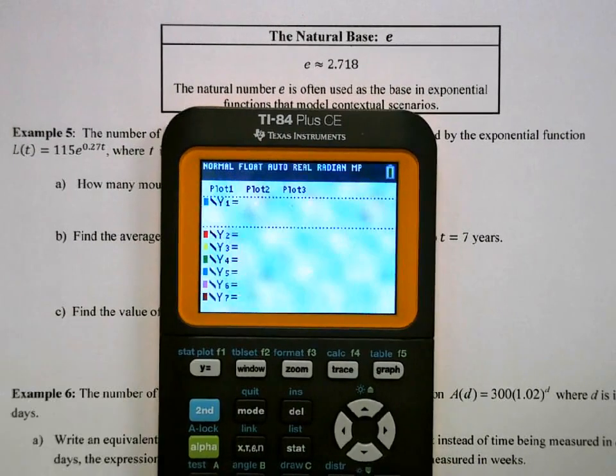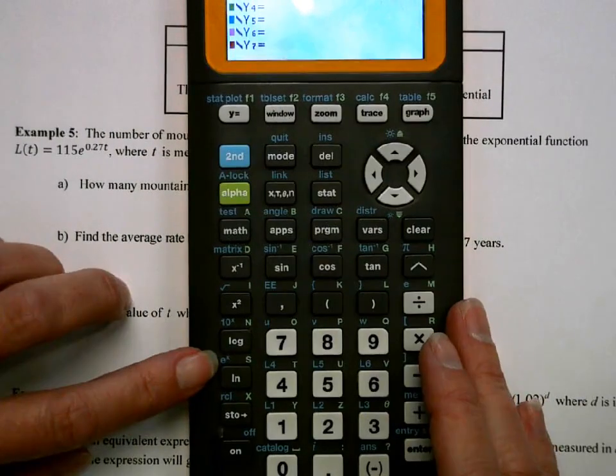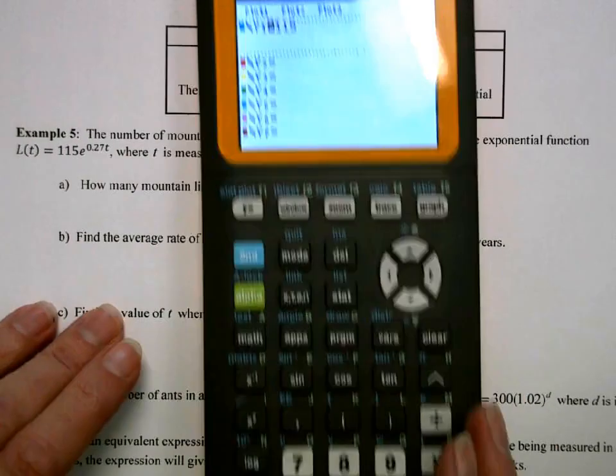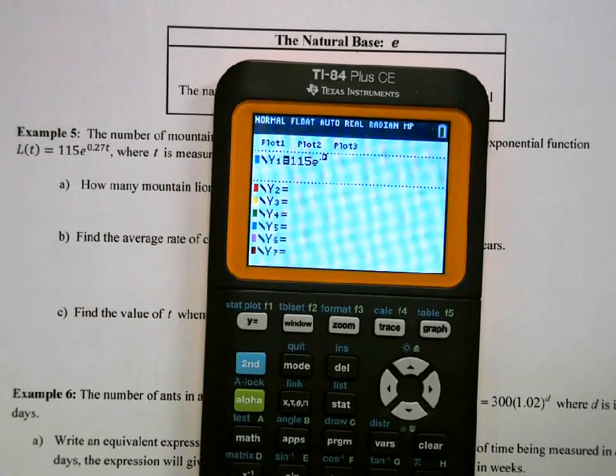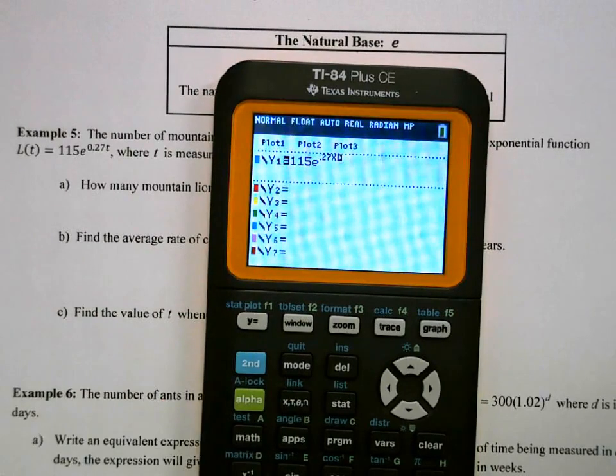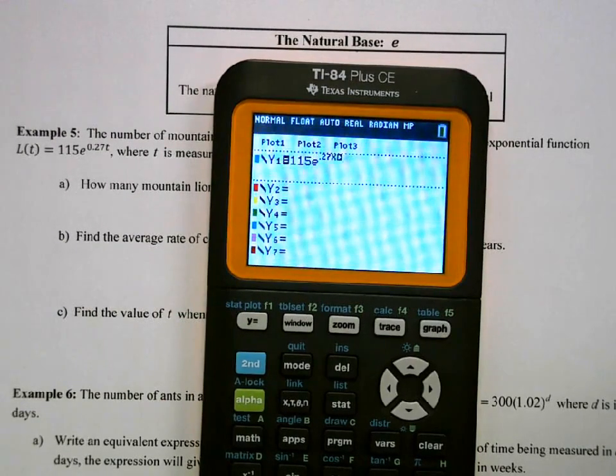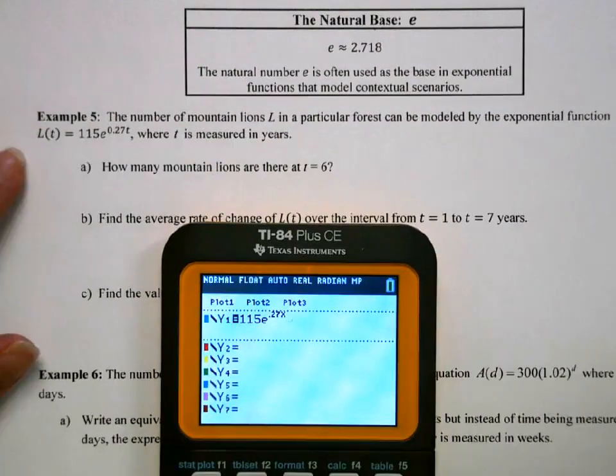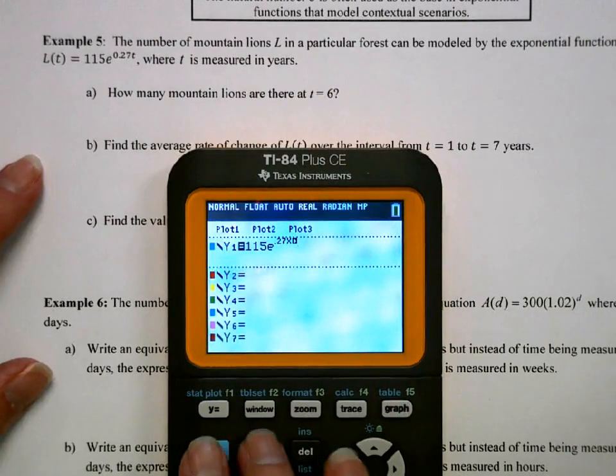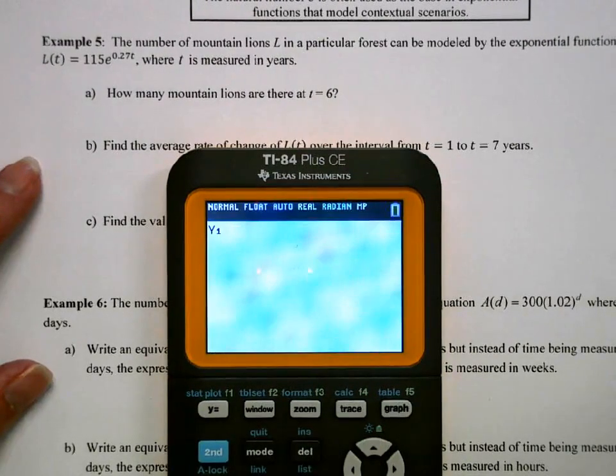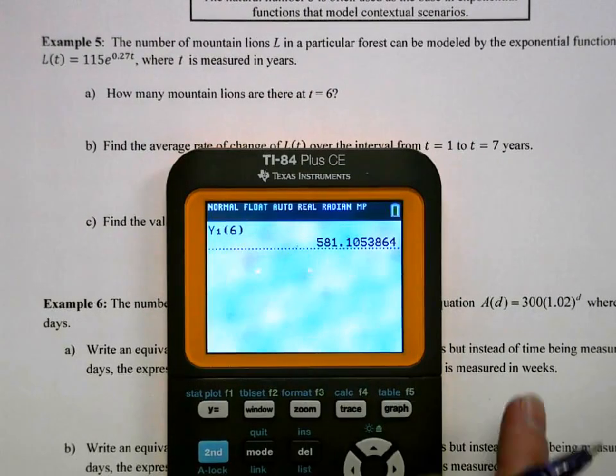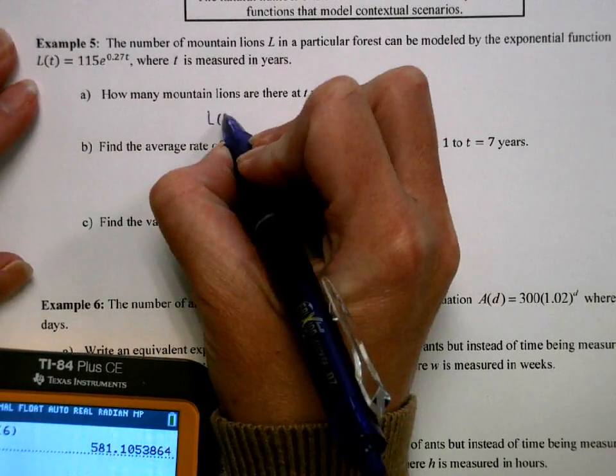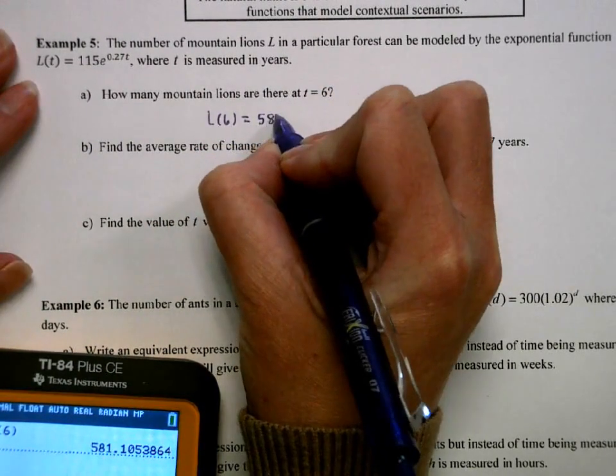So I'm going to store it 115. To get to e above the natural log button, you'll see a little e to the x. So we're going to do second e to the x, 0.27x. So now any calculations I need involving this equation, I can simply just use y1. So for how many lions there are at t equals 6, I'm going to get out of here and just evaluate my y1 at 6. And we'll round to the nearest whole number there. And that would be mountain lions.